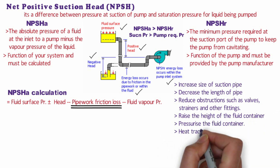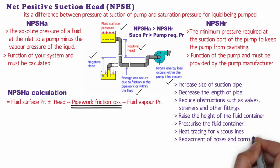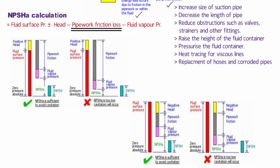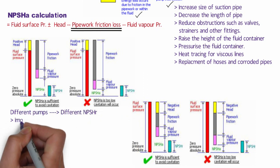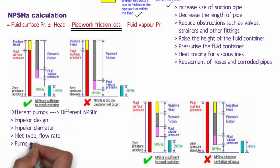Additional measures include heat tracing for viscous lines and replacement of hoses and corroded pipe. It is essential to size the supply pipework and isolation valves generously so that high friction losses do not reduce NPSHa below NPSHr, which leads to cavitation. In a system where the fluid needs to be lifted to the pump inlet, the negative head reduces the motive force to move fluid to the pump. Different pumps will have different NPSH values depending on impeller design, impeller diameter, inlet type, flow rate, pump speed, and other factors.